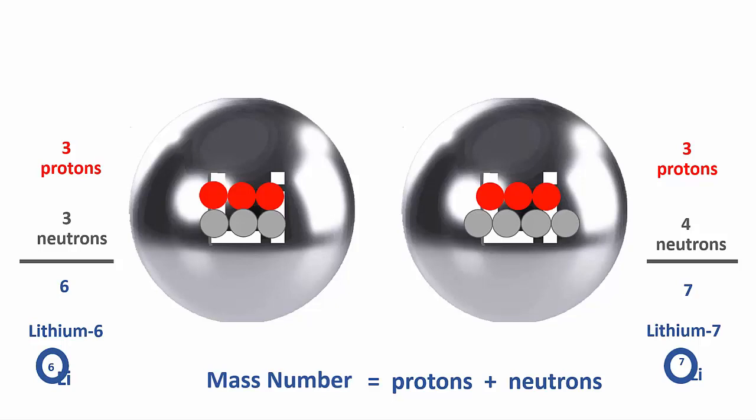But aren't these two lithiums different kinds of atoms if they have a different number of neutrons? Maybe one's a gas and the others are solid. No. Both nuclei have three protons. So both have an atomic number of three, making them both lithium.